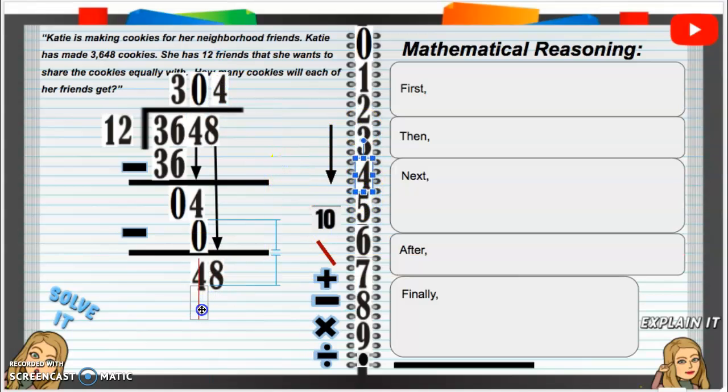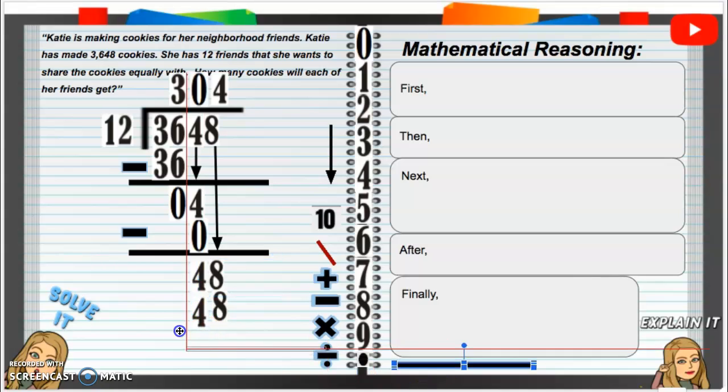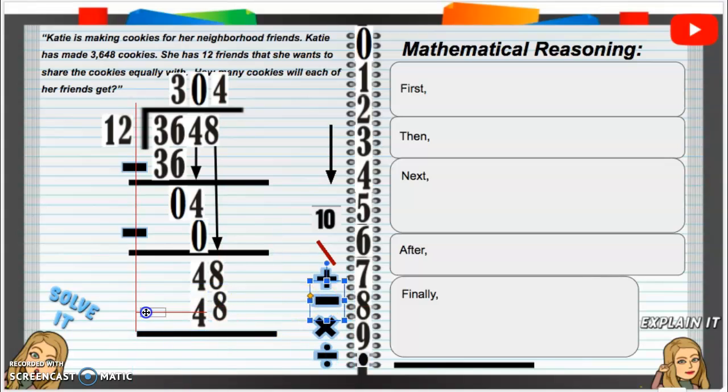So, let's put that 48 down there. Now, if we do 48 minus 48, we are going to get 0. So, 48 minus 48, we will get 0. And there's no remainders. And there's nothing left to bring down. So, our answer is 304. Well, our answer is going to be 304 cookies that each of her friends are going to get. So, let's write about it.